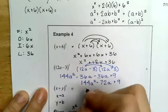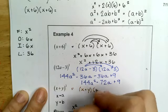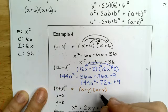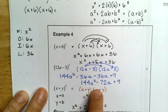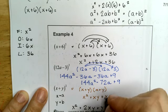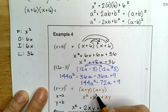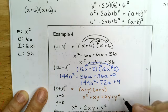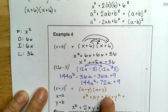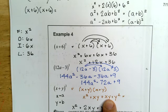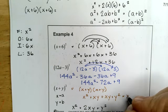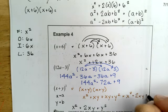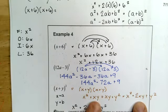I'll FOIL it and you'll see that you get the same answer in the end. x plus y quantity squared is the same as x plus y times x plus y. x times x is x squared, x times y is xy, y times x is xy, and y times y is y squared. You can combine the like terms: xy plus xy — you're not multiplying, you're just counting them. One xy plus one xy is 2xy, so that's x squared plus 2xy plus y squared. Either way, you get the same answer.